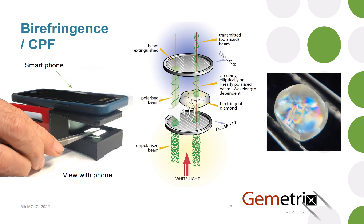The birefringence or strain within a diamond can be revealed by observing the stone through cross polars. By having the axis of the polarisers orthogonal to each other, no light should get through — the view should be black. But if there's some rotation of the polarisation through the stone, colours can appear, particularly if that rotation is frequency or wavelength dependent, which it is. Here's an example of colours seen in a rough diamond, where strain is commonly exhibited around inclusions.